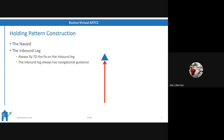The inbound leg is key. You always fly to the fix on the inbound leg, and that's always the leg that has navigational guidance. So on the inbound leg, you're actually tracking a navigational reference. On the outbound leg, you're using dead reckoning. To reiterate: you're always flying to the fix on the inbound leg with navigational guidance.